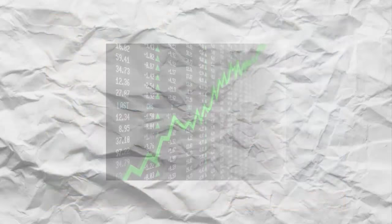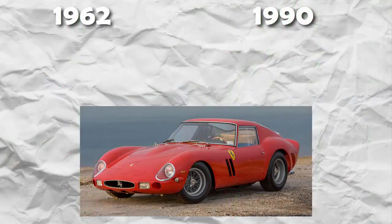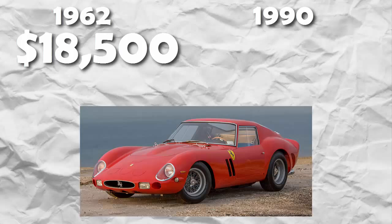But the story truly begins long after the 250 GTO was removed from competitive racing. Throughout the 70s and 80s, classic car values rose rapidly. While a brand new 250 GTO was worth $18,500 in 1962, by 1990 — the peak of the boom — the same car would be worth around $13 million.